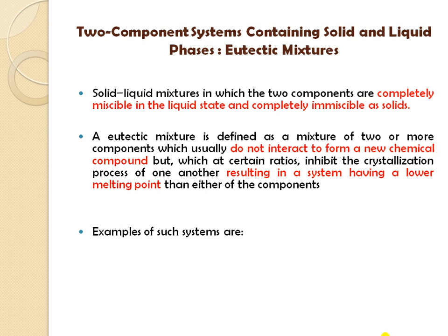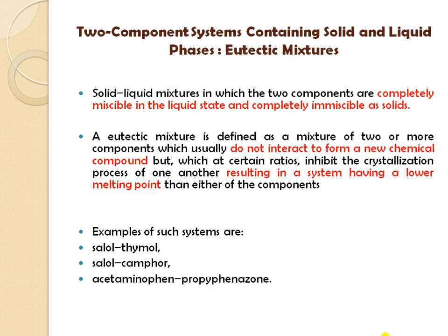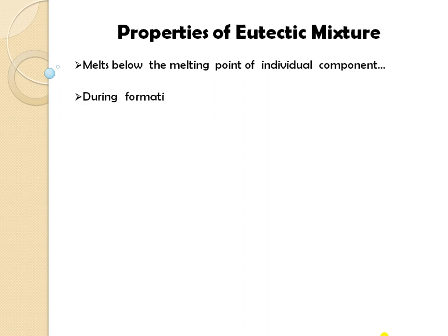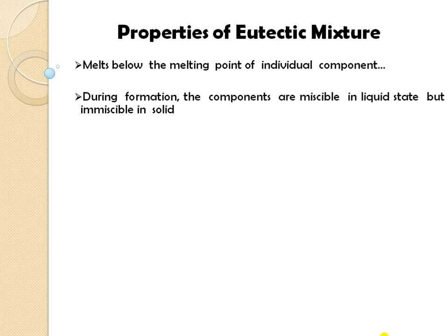Examples of such systems are menthol-thymol, menthol-camphor, and acetaminophen and propyphenazone. Now we will move towards the properties of eutectic mixtures. They melt below the melting point of the individual components, meaning there is a reduction of the melting point due to the presence of another component. During formation, the components are miscible in liquid state and completely immiscible in solid state. The melting point is always fixed.